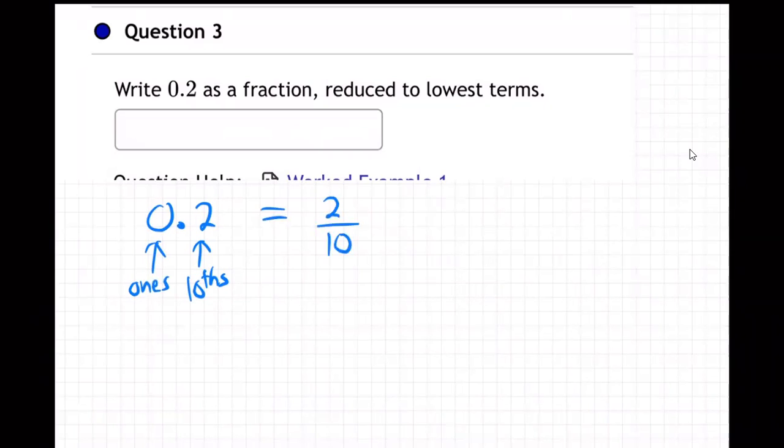Does that make sense what I did there so far? Because of where the decimal ends and the name of the ending place, that's the tenths place, that means this is two-tenths. Okay, and now we have to reduce it.